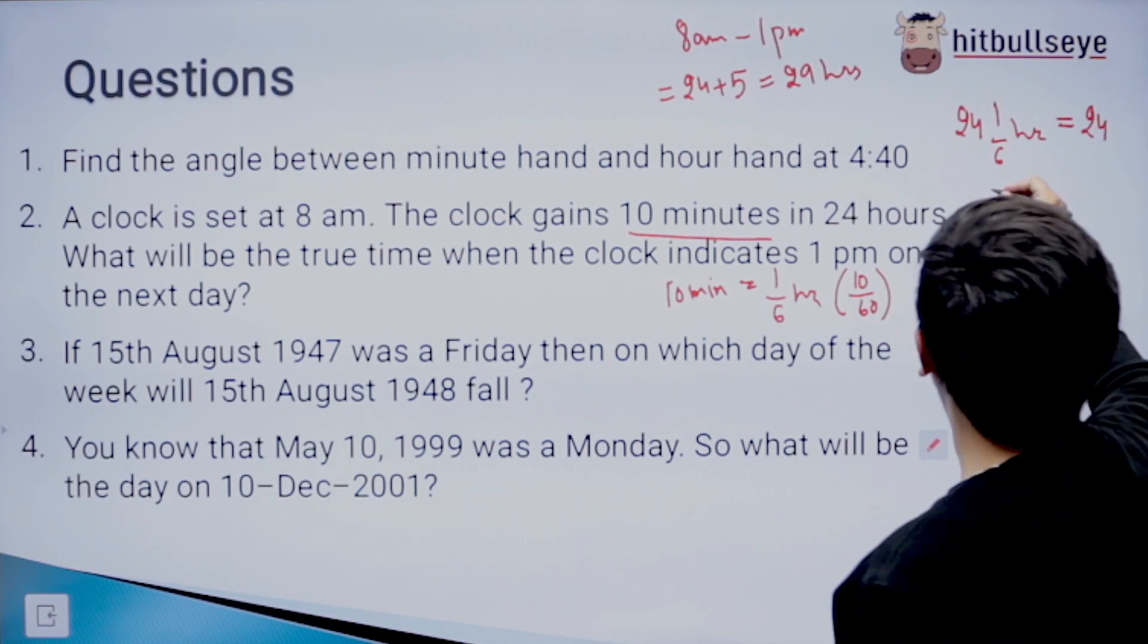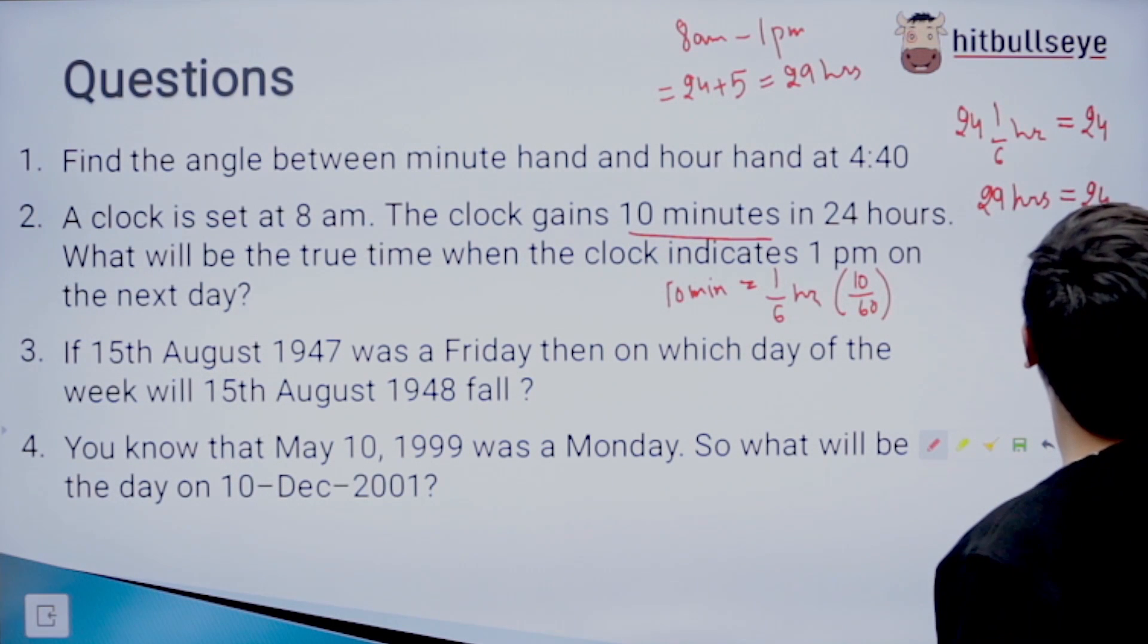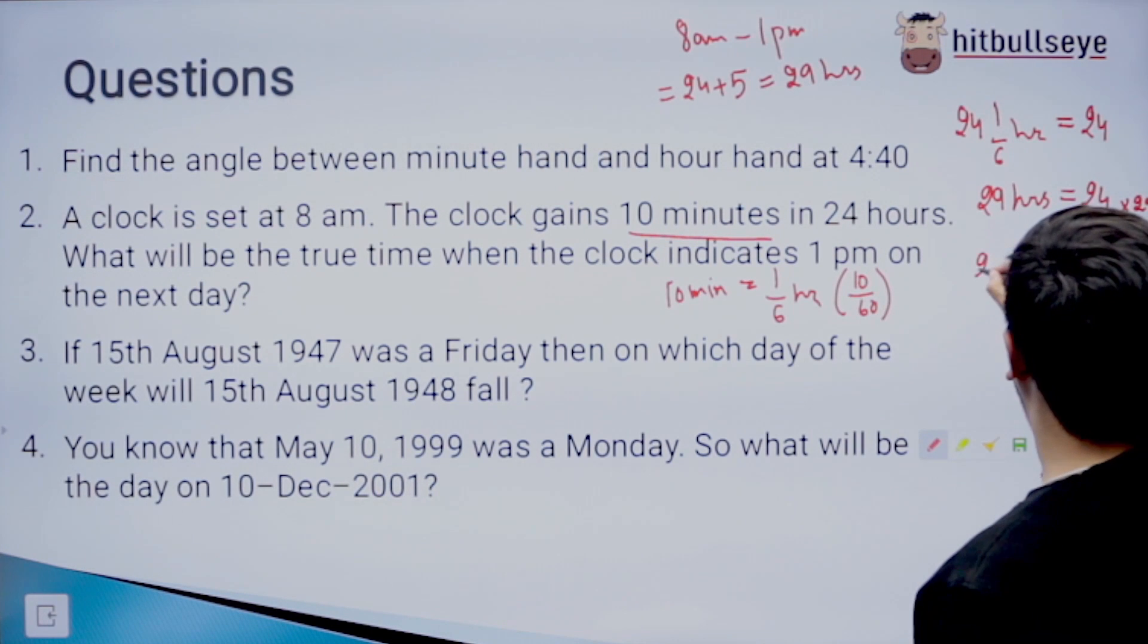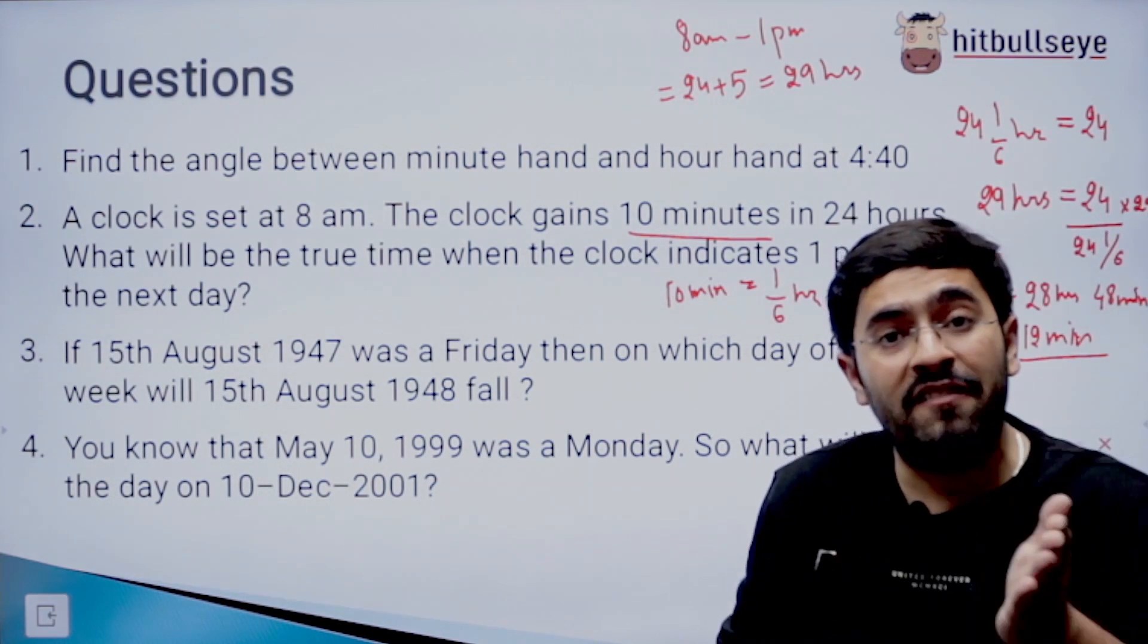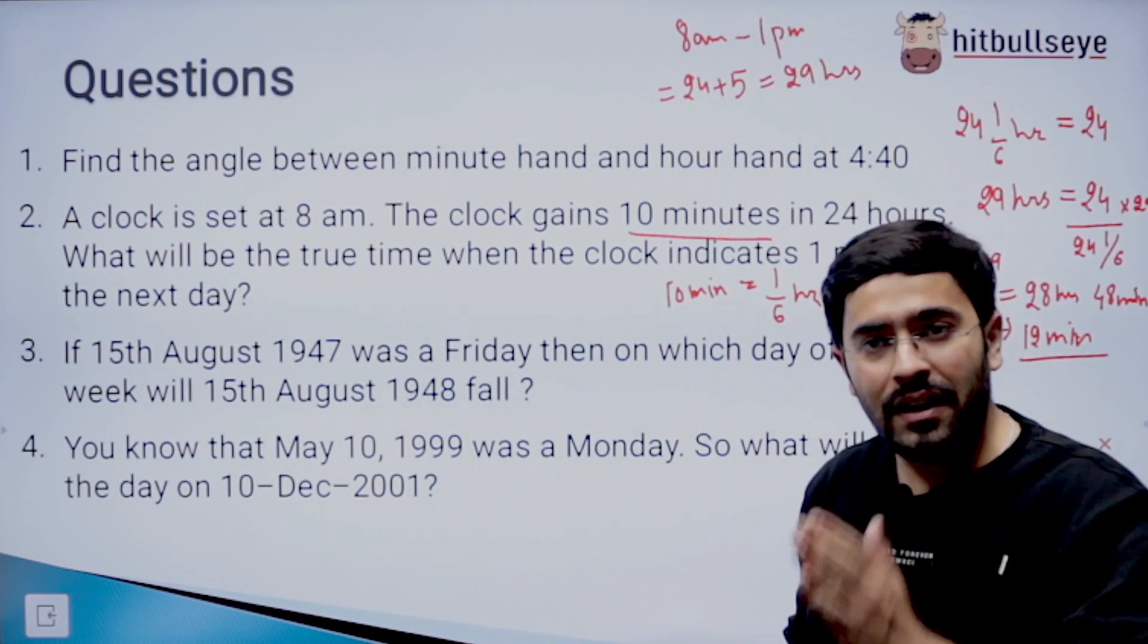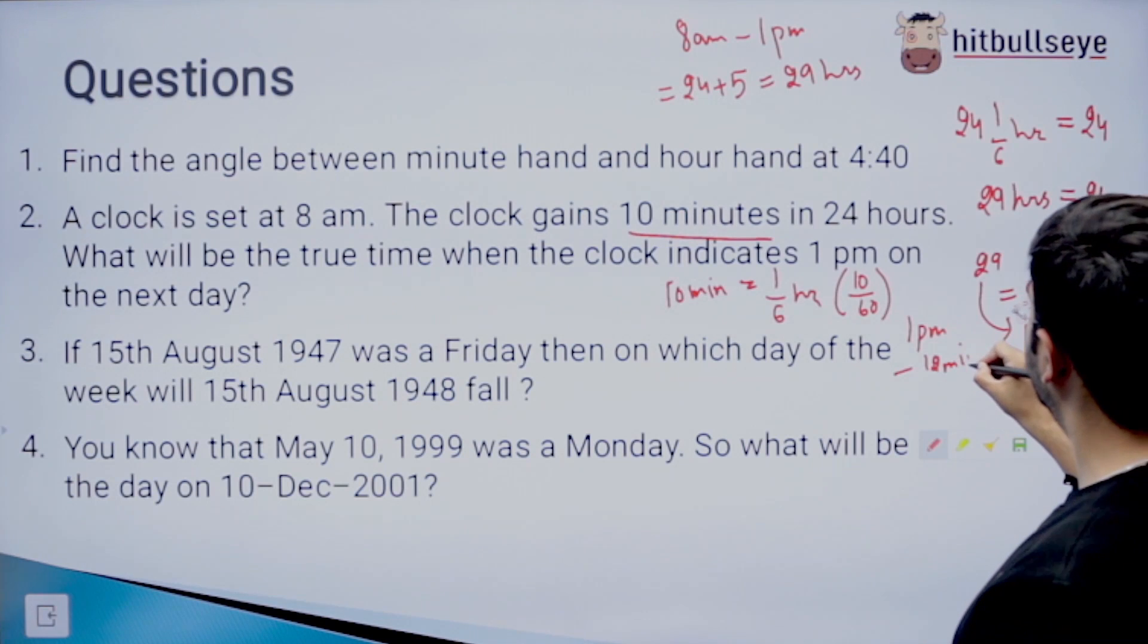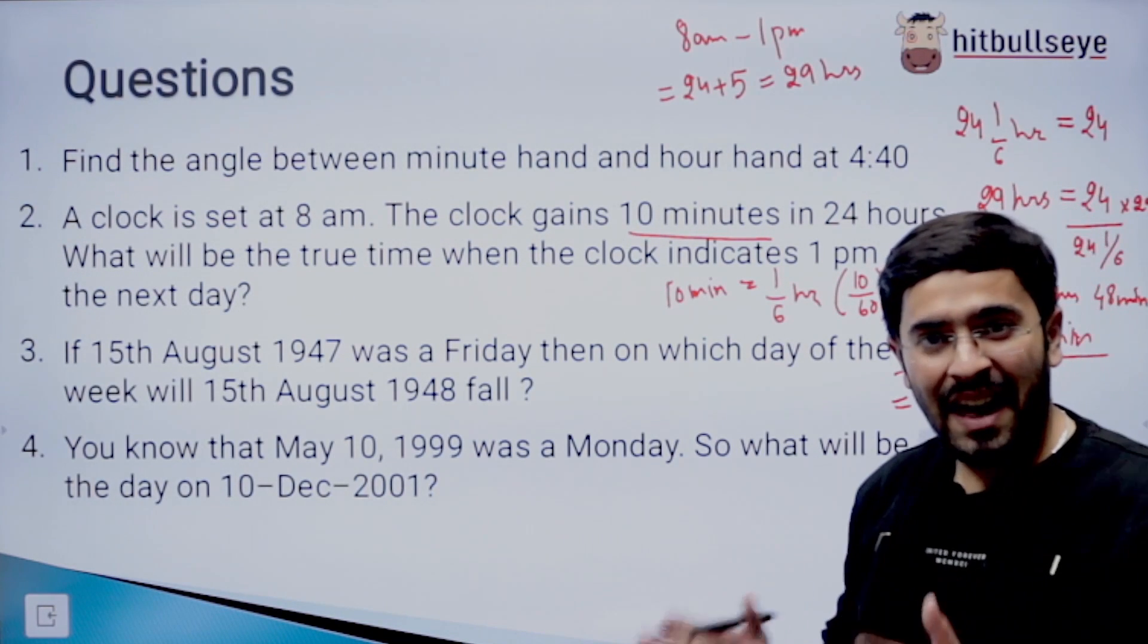So when the clock shows 29 hours, then how much will it show? 24 by 24, 1 by 6 into 29. We solve it out to be 28 hours and 48 minutes. So if I subtract it from 29, then it shows 12 minutes. So the clock shows 12 minutes extra time. 1 PM minus 12 minutes gives out to be 12:48 PM. Am I correct? Yes.